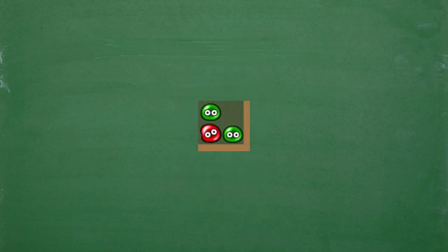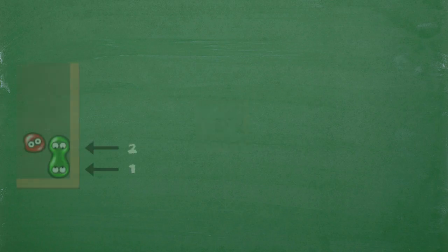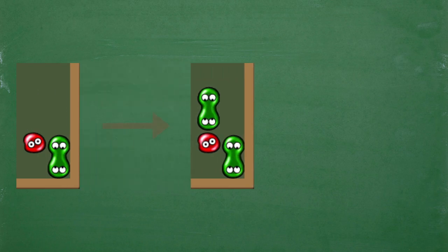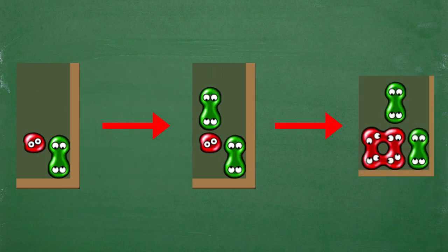This also works the same if your base is a group of 1. The important thing to keep track of is how many Puyos we're missing. In this case, we only have 2 greens, so we need 2 more. We can add those on top of the red, like this. And then if we complete the trigger, we can see that it works the same as the previous examples.